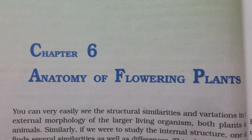6.2.1 Epidermal Tissue System. The epidermal tissue system forms the outermost covering of the whole plant body and comprises epidermal cells, stomata and the epidermal appendages — the trichomes and hairs. The epidermis is the outermost layer of the primary plant body, made up of elongated compactly arranged cells which form a continuous layer. Epidermis is usually single layered. Epidermal cells are parenchymatous with a small amount of cytoplasm lining the cell wall and a large vacuole. The outside of the epidermis is often covered with a waxy thick layer called the cuticle, which prevents the loss of water. Cuticle is absent in roots.